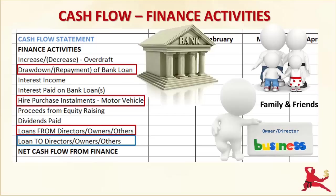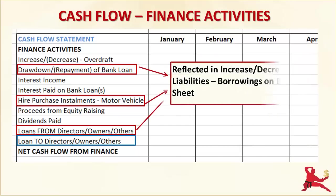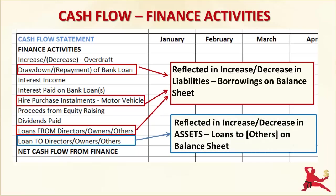If your business lends you money or lends other people money, that shows up as cash outflows in the Finance Activities section. These financing cash inflows and outflows are reflected in movements in borrowings under Liabilities on the Balance Sheet if your business borrowed money. If your business lends money to you or other parties, these loans show up on the asset side of the Balance Sheet as loans to directors or other parties.